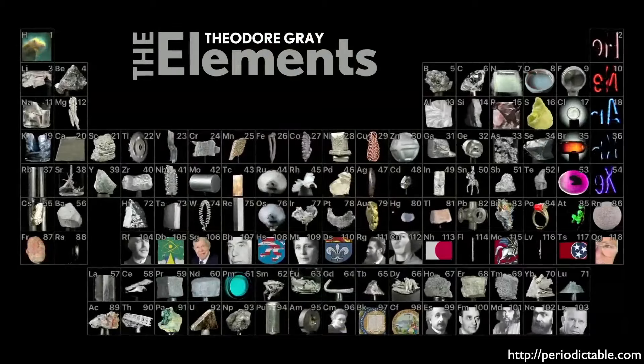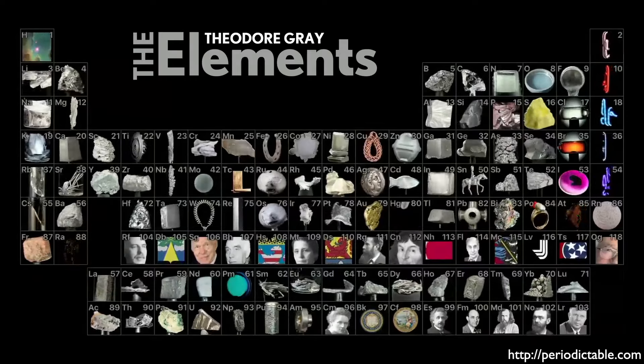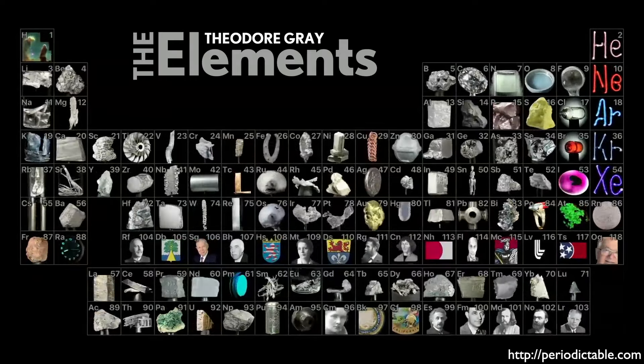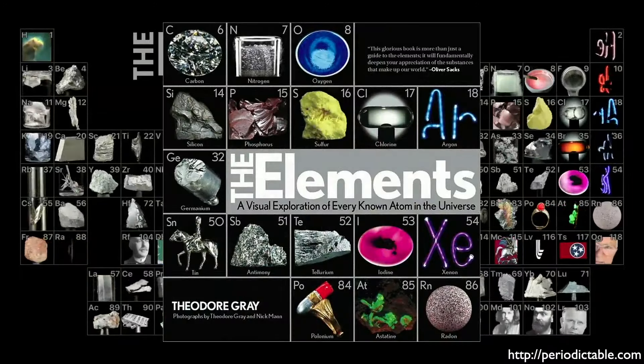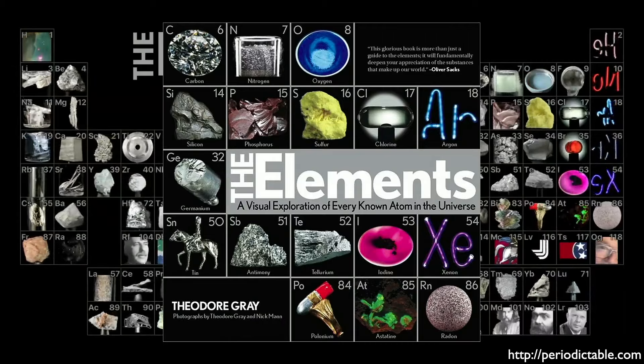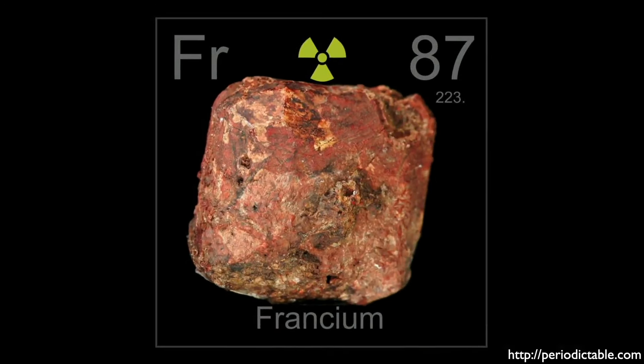Here we see Theodore Gray's beautiful Periodic Table. As I've mentioned in previous episodes, Tao has written one of my favorite books called The Elements, which I encourage you to pick up. Check out his fantastic website, Periodictable.com. Francium is the 87th element in the Periodic Table. Its atomic number is 87 because that's how many protons are in its nucleus, and that is what distinguishes it as a unique element.